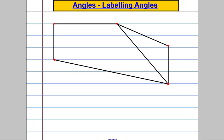The big idea: suppose I gave you the following shape and I asked you to identify or label all the angles that have anything to do with that shape. The first thing you could do is give this angle an A — now it looks like 90 degrees, but you might call it something so you can refer to it, and you might call it angle A.